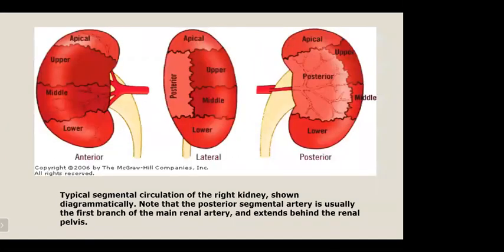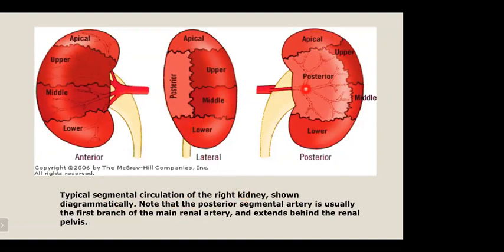This diagram shows the typical segmental circulation of the right kidney. The posterior segmental artery is usually the first branch of the main renal artery and extends behind the renal pelvis. Then we have the apical, upper, middle, and lower segmental branches.